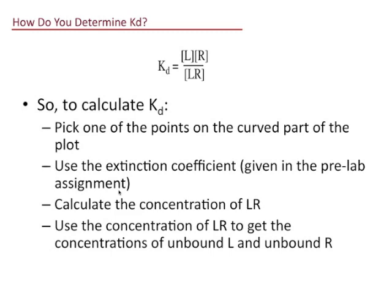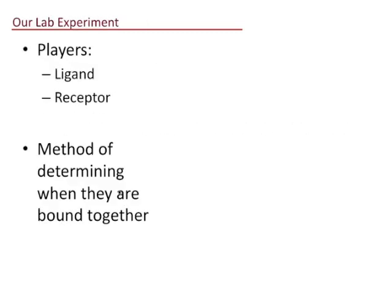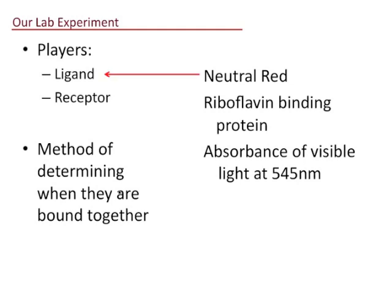It's going to get more complicated. We'll talk about that when we get together in person. Let's look at our actual lab experiment. Here are the players. In our case, the ligand is going to be neutral red. Our riboflavin binding protein is the receptor. This is a protein that binds riboflavin, which is vitamin B2, and delivers it to various locations in the body. We need a method of determining the concentration of the complex. We're using absorbance of visible light at 545 nanometers, just like in our example.